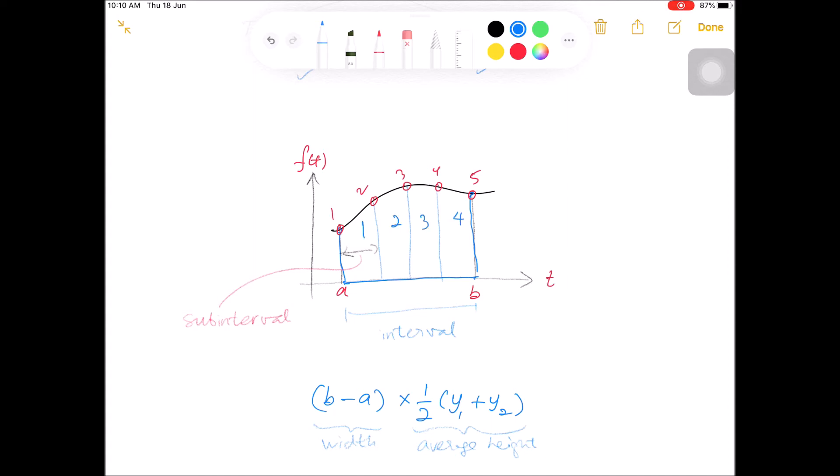Let a big N be the number of points and the small n be the number of subinterval. So the number of subinterval is one less than the number of points, in which small n equals to big N minus one.